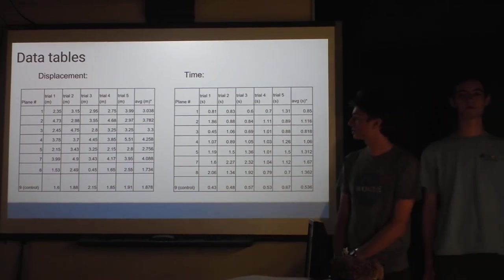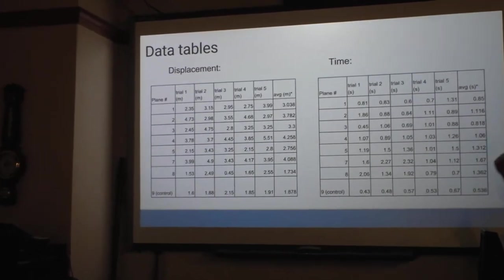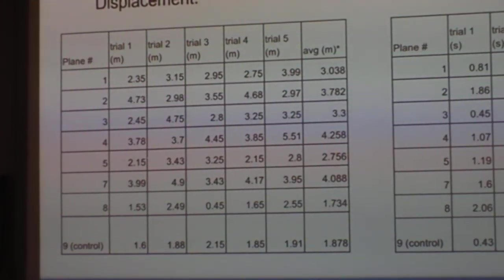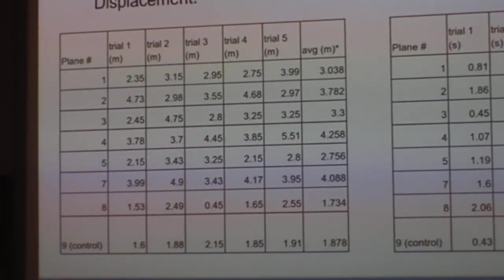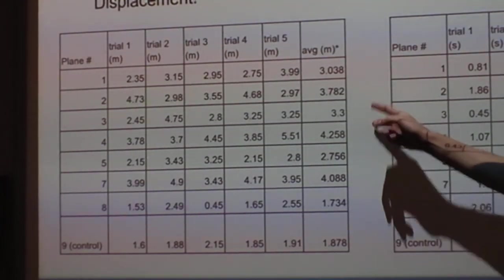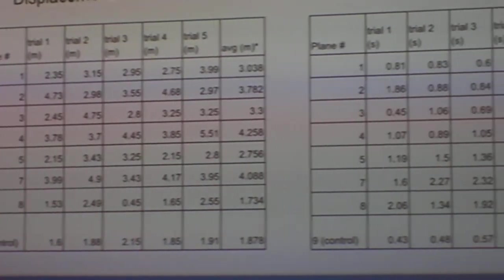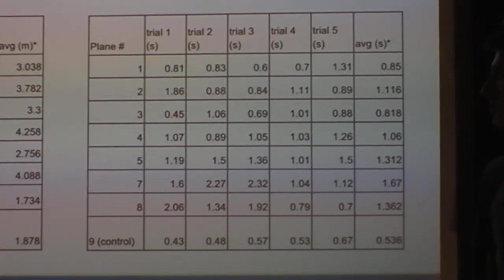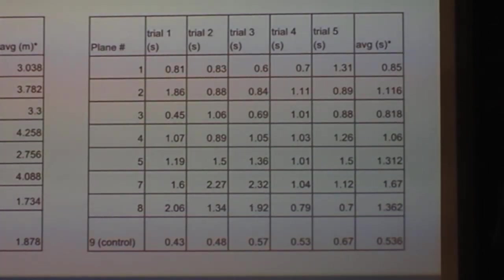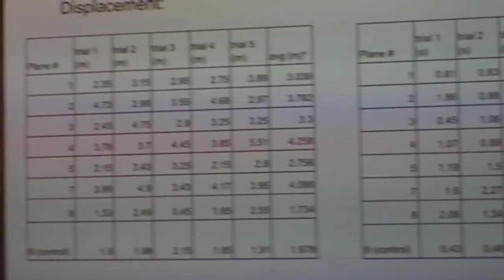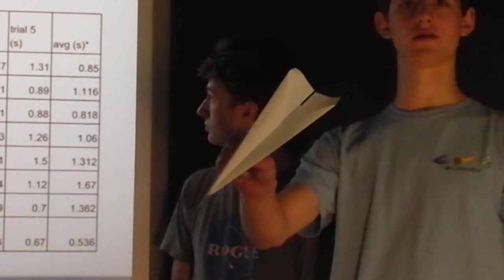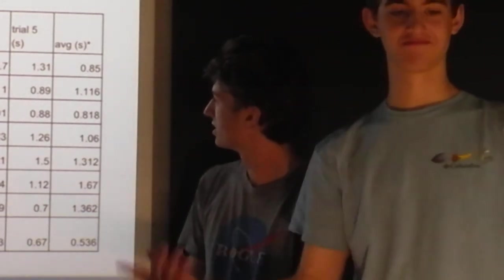So these are some data tables. We have the plane number and then we have the displacement and the time. So as you can see over here, plane seven and four were both the ones that flew the farthest. By quite a bit. Some of them didn't do really well. Nine was our control. Because it's this one. This is the plane that most people know how to make. It's just the average, quintessential paper airplane.